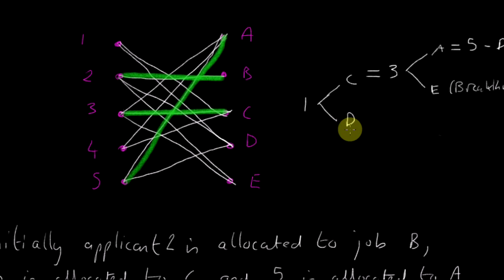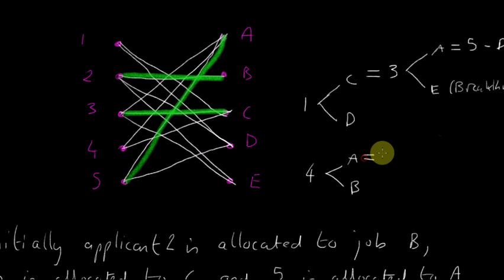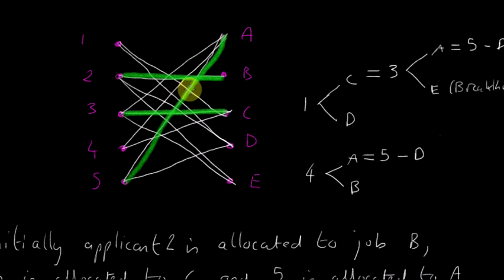Now we want to go from node 4. You can go from 4 to C and 4 to A. Let's start at A: A has a green line going to 5, so that's a double line. Then from 5 we can go to D — single line. There's no green line going from D, so that's a breakthrough.